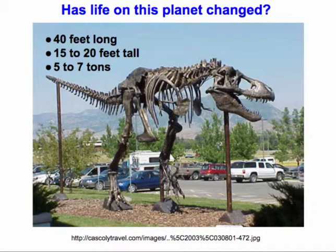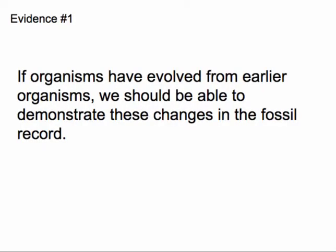Imagine a T-Rex that's 40 feet long, 20 feet tall, and weighs 5 to 7 tons. It's clear that if an organism like that still existed, we would be aware of it. So we know that life on this planet has changed, but the focus of evolution — the part that's in dispute — is whether the organisms that exist today are descendants of those previous organisms. Looking at evidence number one, if organisms have evolved from earlier organisms, we should be able to demonstrate these changes in the fossil record.